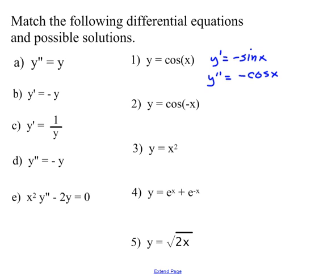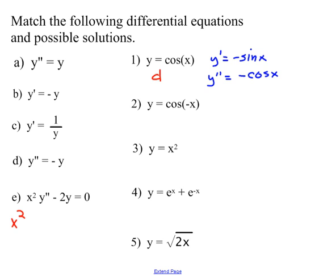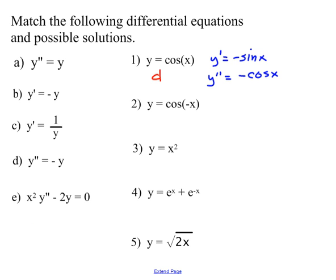Checking y = cos(x) against each equation: y double prime (−cos x) is not the same as y prime (−sin x), so not A. y prime (−sin x) is not −y, so not B. Not C either. For D: y double prime = −cos(x) equals −y = −cos(x). Yes! So number one is a solution for D. Checking E: x² times (−cos x) − 2cos(x) does not equal 0 for all x. So number one is a solution for D only.